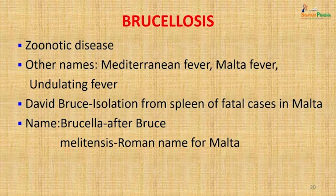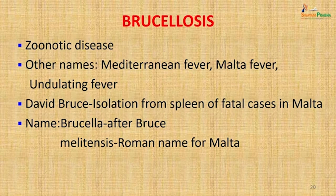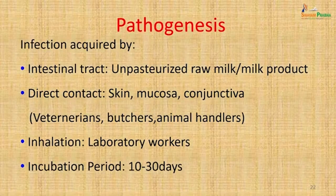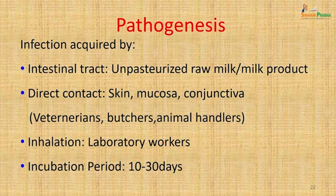Brucellosis is essentially a zoonotic disease. Other names include Mediterranean fever, Malta fever, and undulating fever. It is named after David Bruce who first isolated it from the spleen of a fatal case in Malta — Brucella after Bruce, and melitensis from the Roman name for Malta. Its virulence is attributed to its ability to resist phagocytosis and survive intracellularly in the reticuloendothelial system. It has two antigens: the A antigen, abundant in Brucella abortus, and the M antigen, abundant in Brucella melitensis. Infection is usually acquired through unpasteurized milk or milk products, or through direct contact via skin, mucous membrane or conjunctiva — typically seen in veterinarians, butchers, and animal handlers. Inhalation can also occur in laboratory workers.